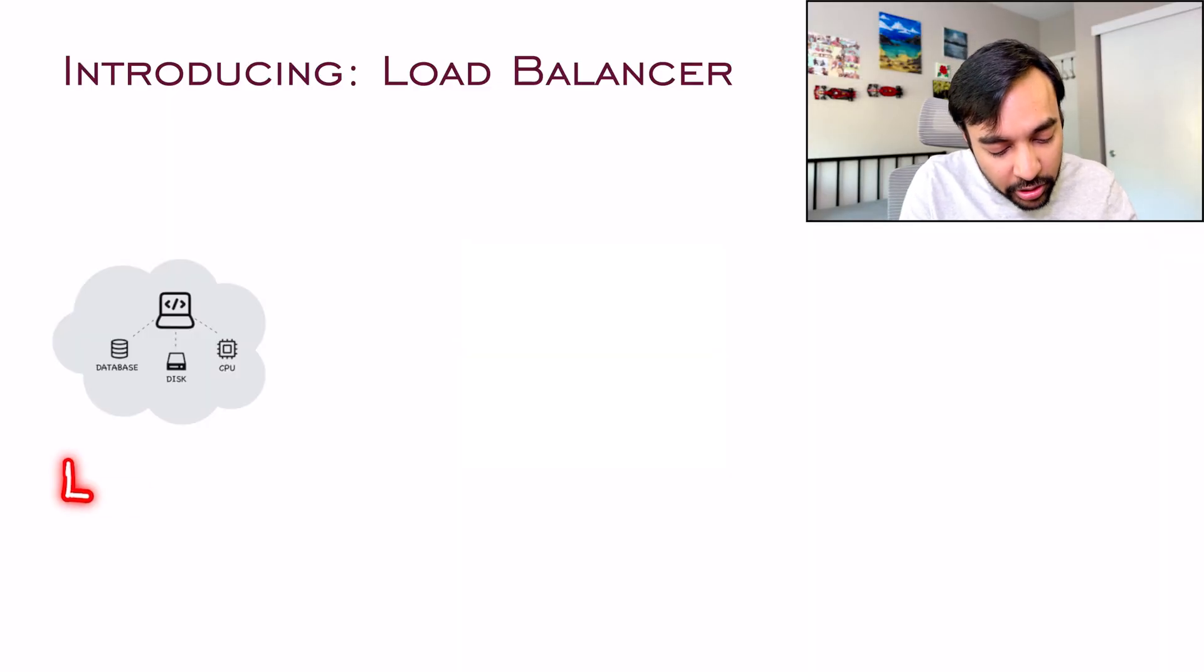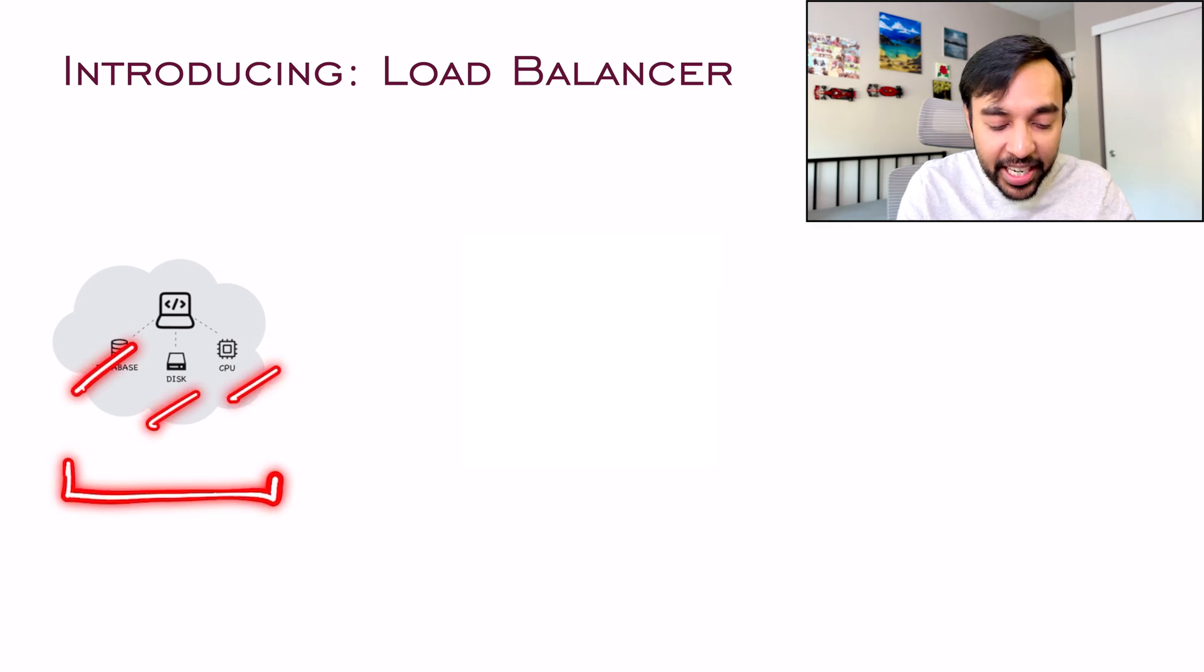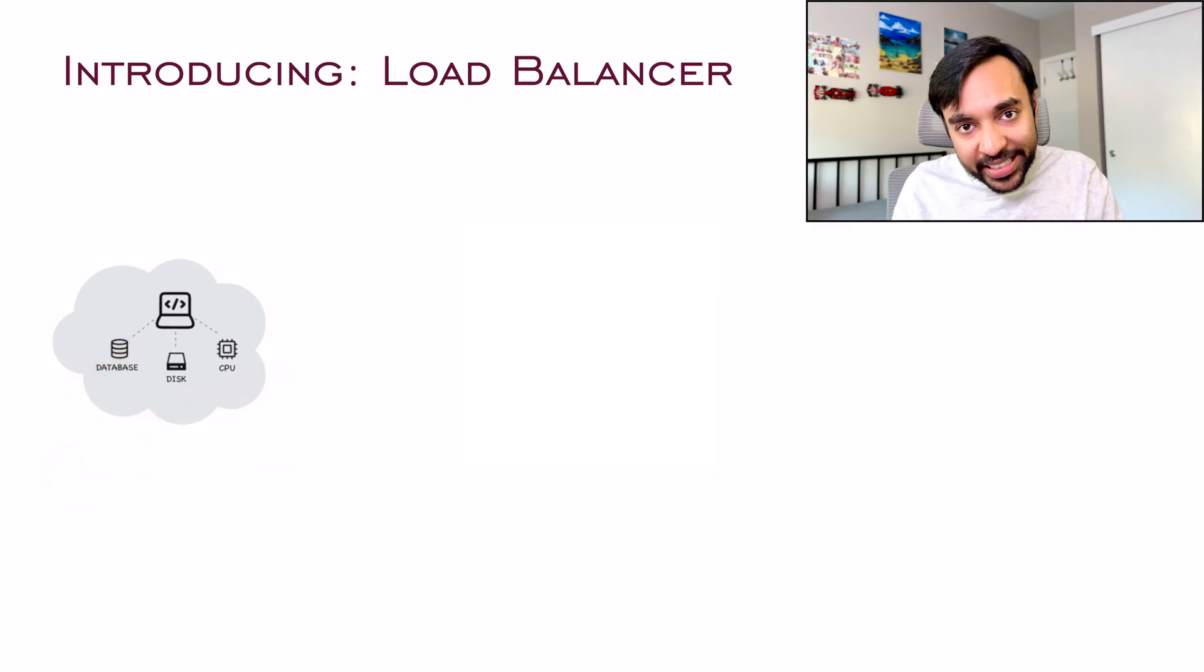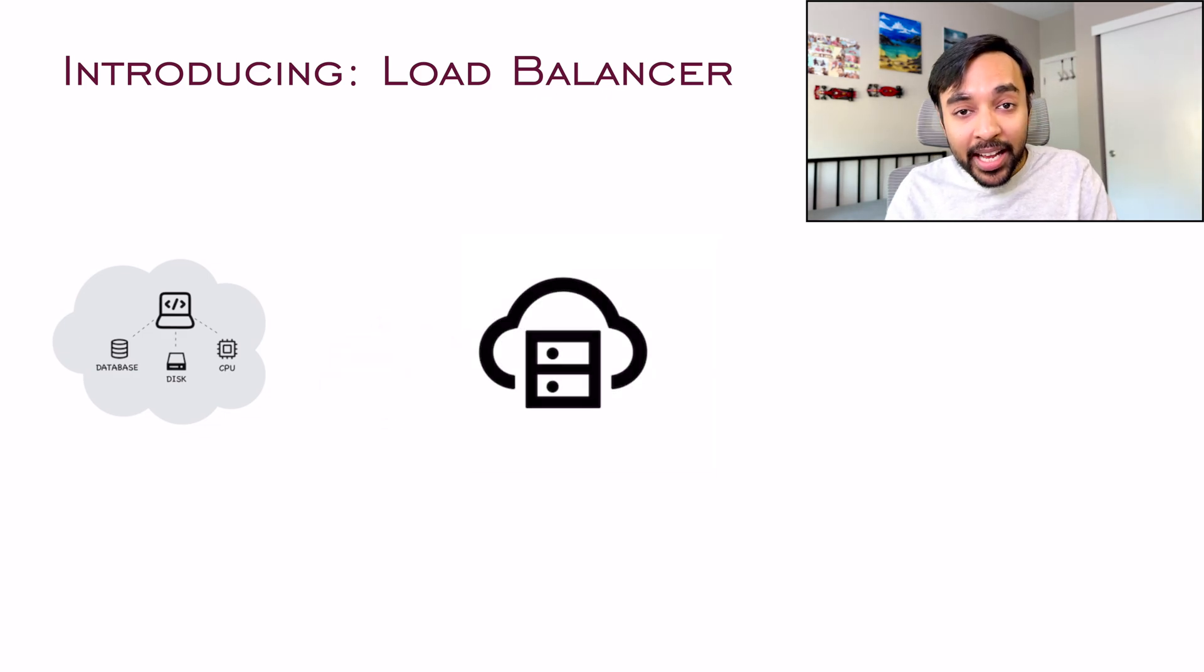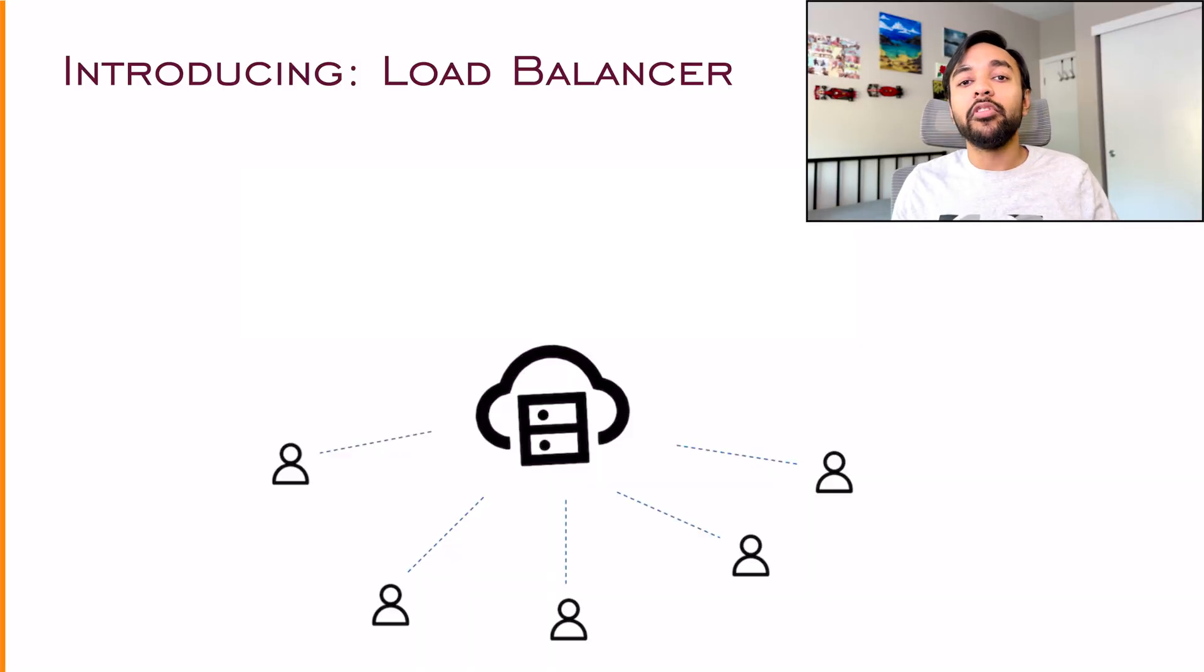This is what happens in a supermarket. What about a computer application and what do you do about system design? If you remember, our server looked something like this. It has its own database, its disk and a CPU. Going ahead in the series, what we're going to do is, we are going to represent our server something like this. And this is a very generic diagram of a server. And you use these kinds of diagrams to make up your entire architecture.